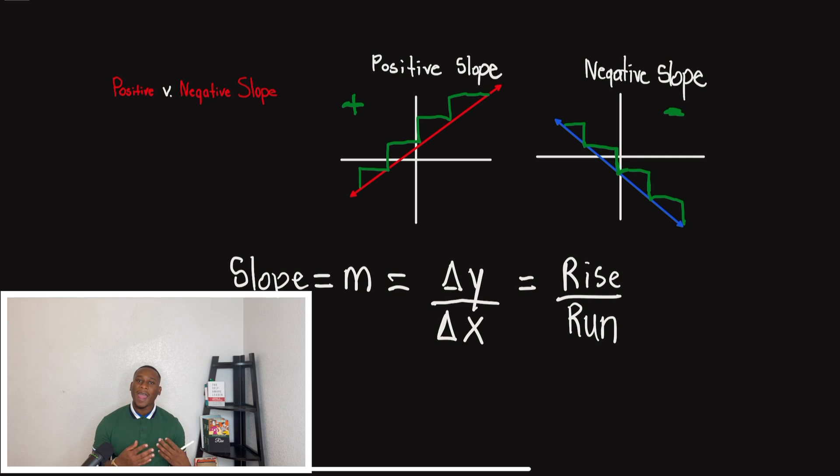And if they give you a line with two points and they ask you to determine the slope, just remember that if your answer is positive, we'll have a positive slope. And if the answer is negative, we'll have a negative slope. And I'm going to show you guys exactly what I mean.